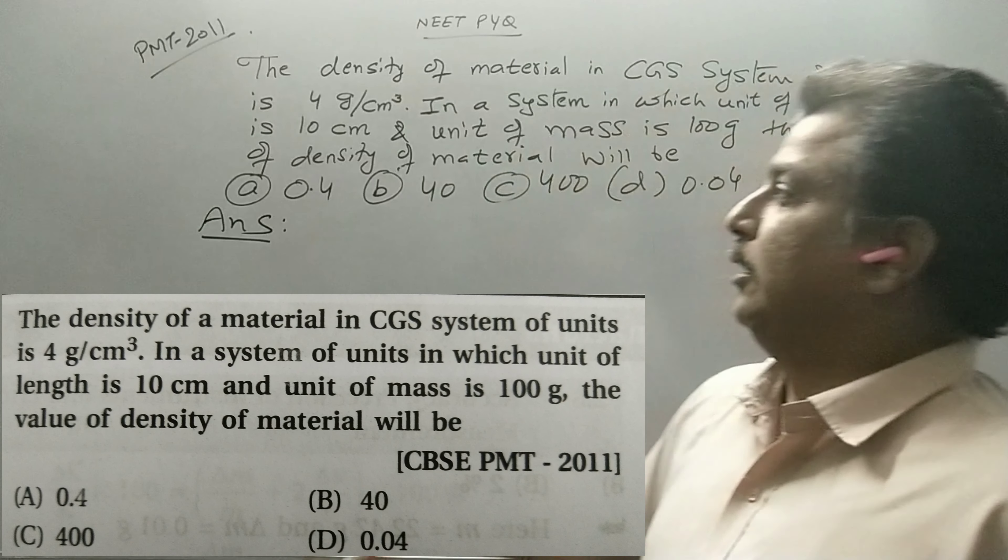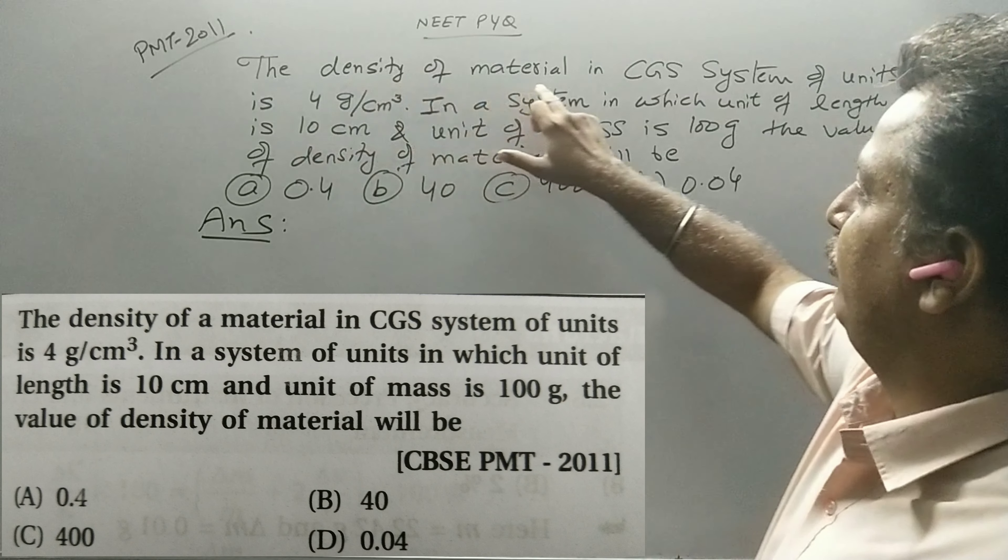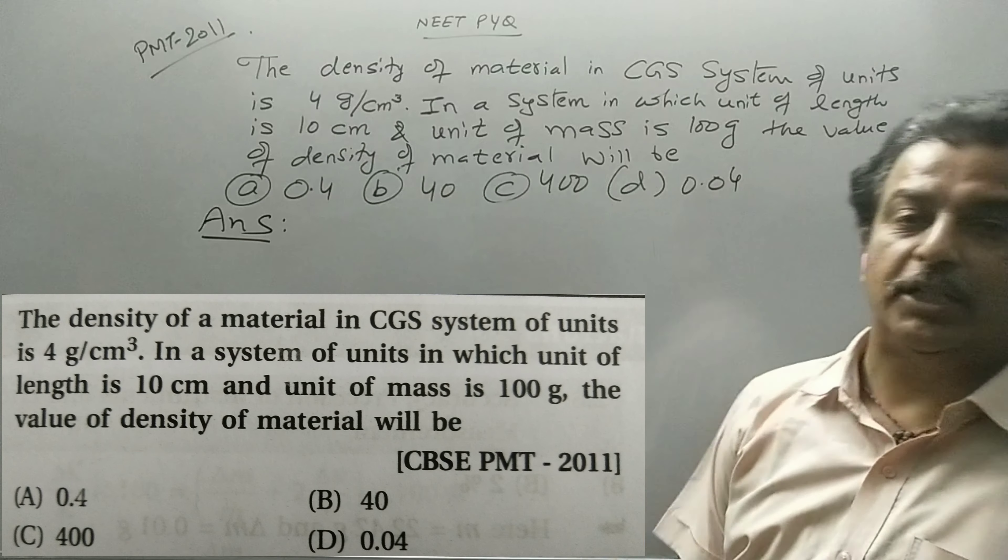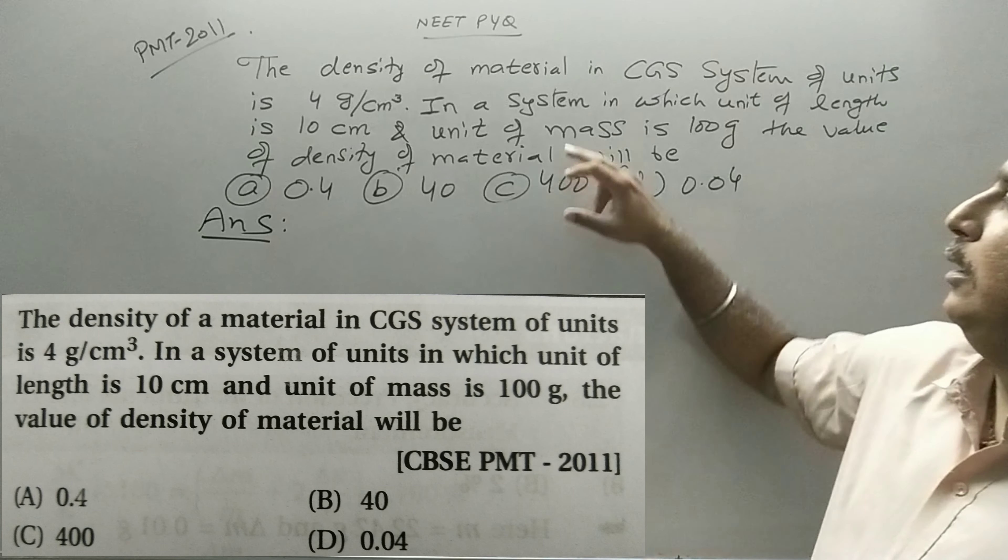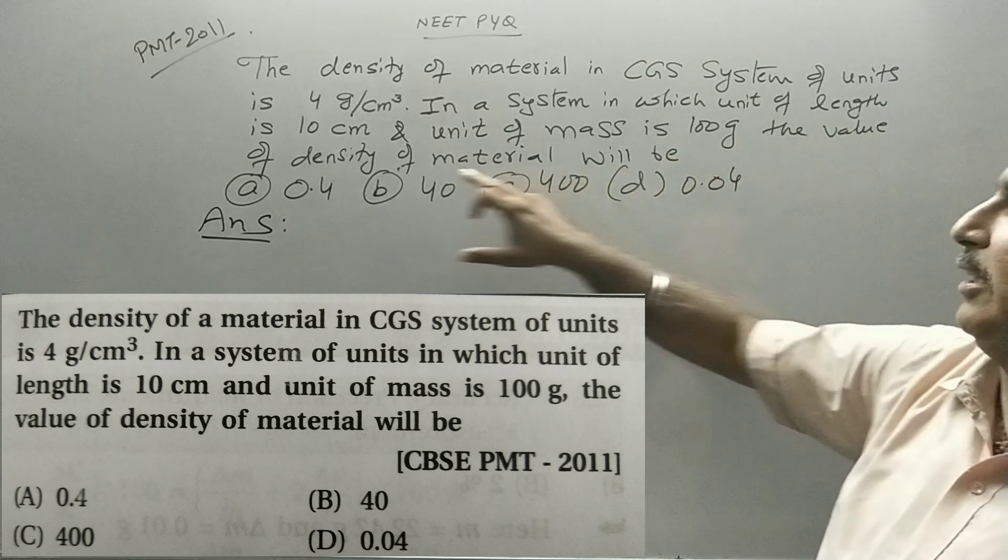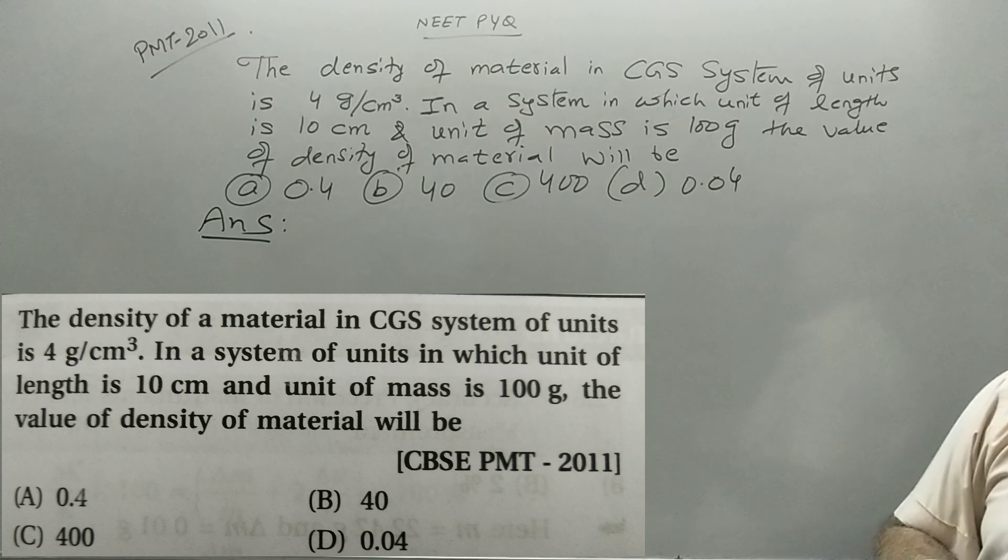Hello students, today's question: The density of a material in CGS system of units is 4 gram per centimeter cube. In a system in which unit of length is 10 centimeter and unit of mass is 100 gram, what is the density of material will be?